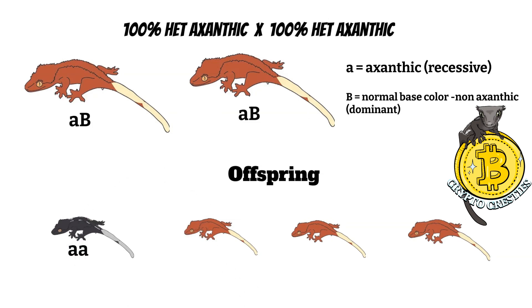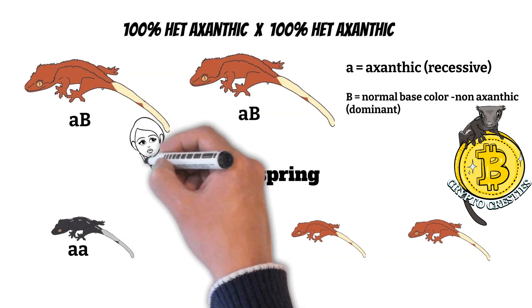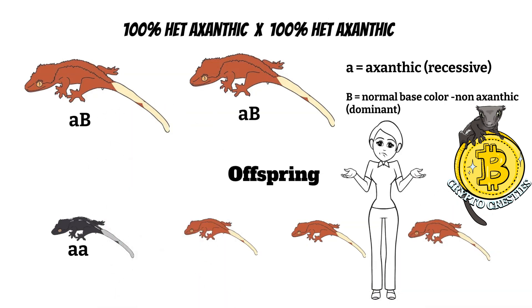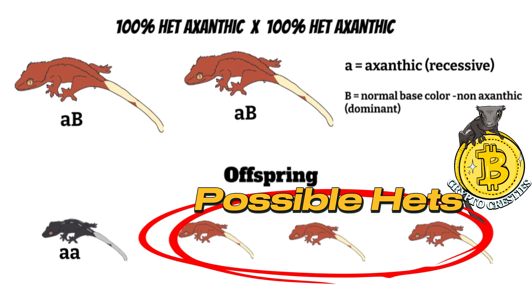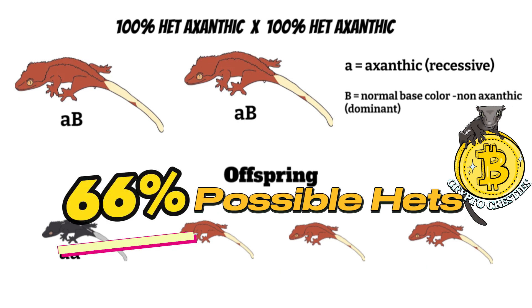Aside from the visual that was produced, do you know which ones are 100% het xanthic? Are they all? Are any? Unfortunately, there is no way to know just by looking at them. All of them could be hets. Some of them could be hets, or none of them. It just depends on how the genes were passed on. Regardless, all three are considered possible hets, and they are what is called a 66% possible het. Now let's see why that is.